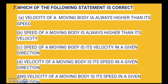Which of the following statement is correct? Options are: velocity of a moving body is always higher than its speed; speed of a moving body is always higher than its velocity; speed of a moving body is its velocity in a given direction. Answer is: velocity of a moving body is its speed in a given direction.